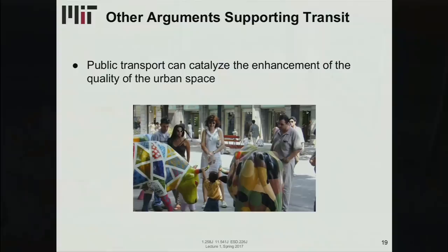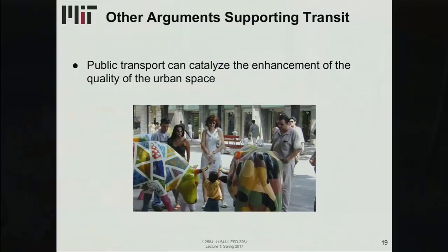Here's a nice picture of public transportation catalyzing the urban fabric. Right? So, making cities more walkable. Just to highlight what we said earlier. OK. Critical assessment. So, we've stabilized public transport in North America. We saw that in the 1990s. We've had an increase in the mode share of auto and a decrease in public transport and walking and biking. And now it's starting to come back up. There are many new rail initiatives like Phoenix, Denver, and Salt Lake City. And they are successful. And especially if we look at older systems like New York City, but also at some of the not so old ones like Houston and Seattle, we see very successful systems that are being heavily used and are contributing to nicer land use and developing the economy. Institutional change is occurring very slowly, maybe too slowly. Many things are changing in terms of technology, in terms of policy, and in terms of what the private sector is offering. And the public sector is not catching up. It's not moving as quickly.